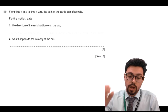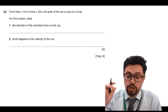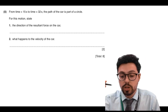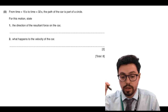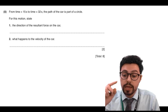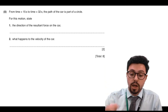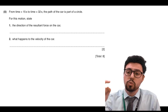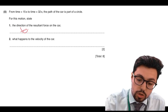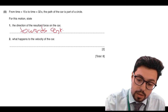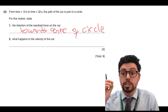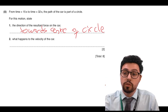The final part of this question added in some circular motion. From time 15 seconds to 32 seconds, the path of the car is part of a circle. In circular motion, for an object moving in a circle, the resultant force must be pointing towards the centre of the circle. So the directional force is towards the centre of the circle — that's really key.